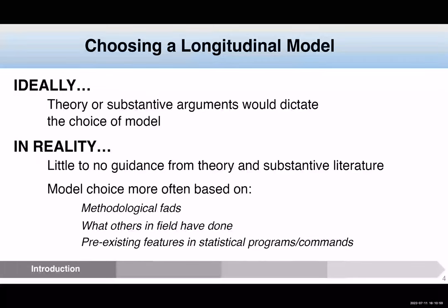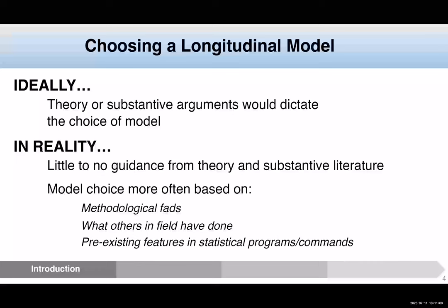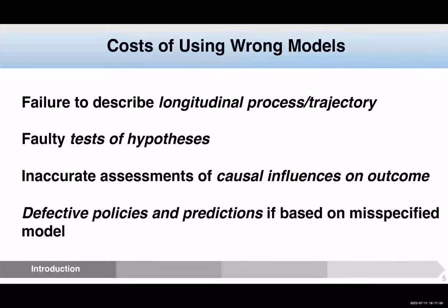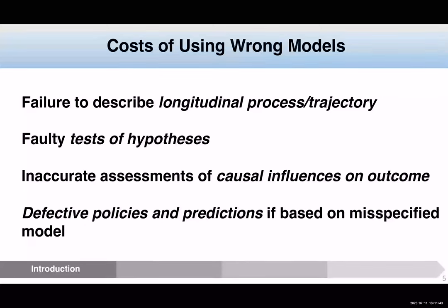We all want to do good science, and that does not sound like good science — just following what other people have done with a particular data set or what the hot technique is for a particular individual. What's the cost of doing this — of using the wrong model? If you think of science as having several functions: description, explanation, prediction, or studying what an intervention will do — all of those things can be thrown out the window if we're using the wrong model. So it really has a strong effect on trying to do scientific research in a wide variety of fields.